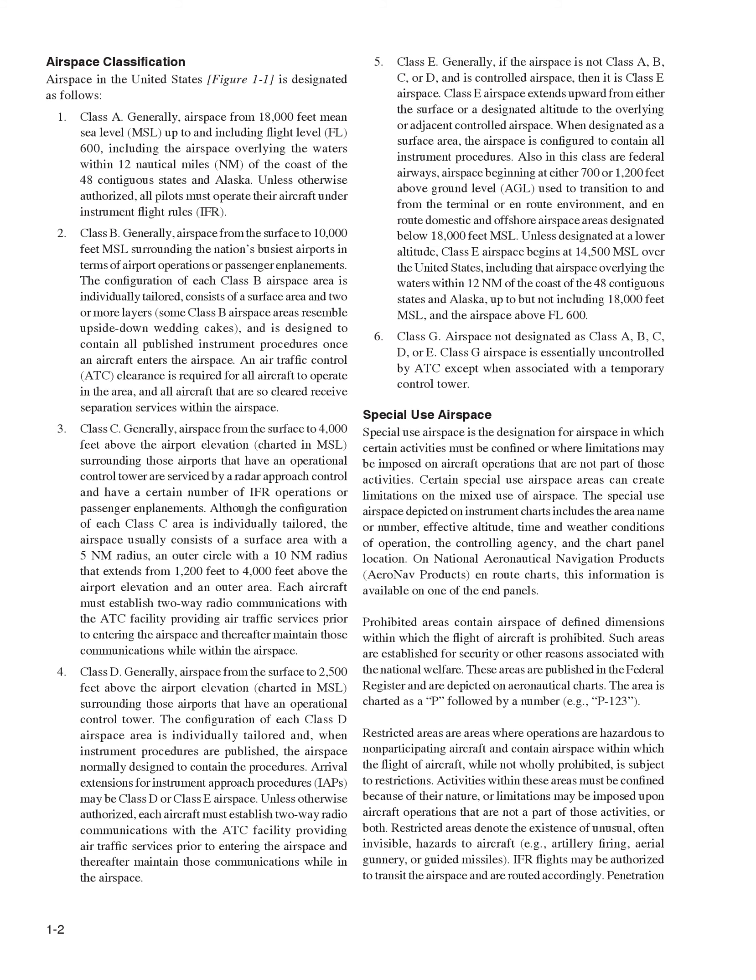Airspace Classification. Airspace in the United States, Figure 1-1, is designated as follows. Class A: generally airspace from 18,000 feet mean sea level, MSL, up to and including flight level, FL, 600, including the airspace overlying the waters within 12 nautical miles of the coast of the 48 contiguous states and Alaska. Unless otherwise authorized, all pilots must operate their aircraft under instrument flight rules, IFR.